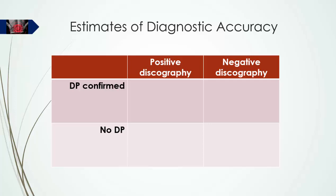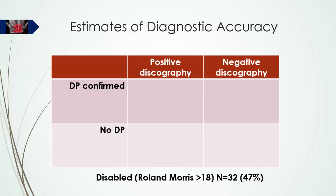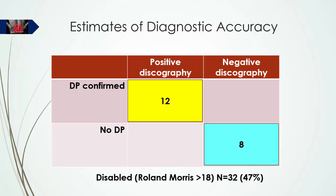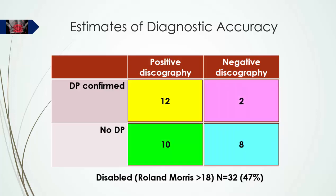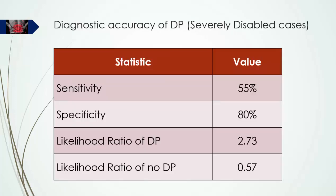Looking at the 32 cases where the Roland Morris Disability Questionnaire indicated severe disability, the diagnostic accuracy of directional preference differs somewhat from the whole sample. The two false positives in the entire sample were both in this severely disabled subgroup, which affects specificity. Sensitivity remains at a similar level of 55%, but specificity in the presence of severe disability drops to 80% rather than 90%. The positive likelihood ratio is reduced to 2.73.